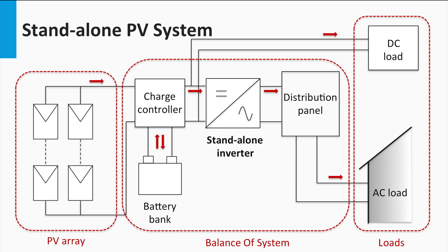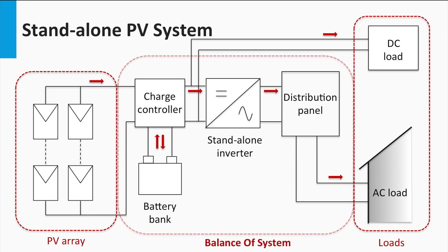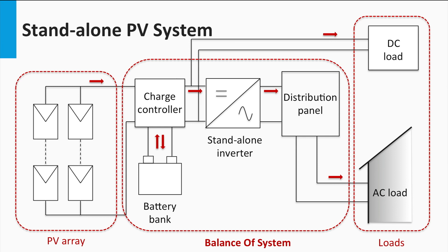The stand-alone inverter is responsible for efficient power conversion from DC to AC power over a wide range of loads. The better the inverter, the higher the efficiency over a variety of loads. Together, the charge controller, battery, inverter, distribution panels, and the wiring make up the balance of system. In general, everything in the PV system minus the PV array constitutes the balance of systems, or BOS.